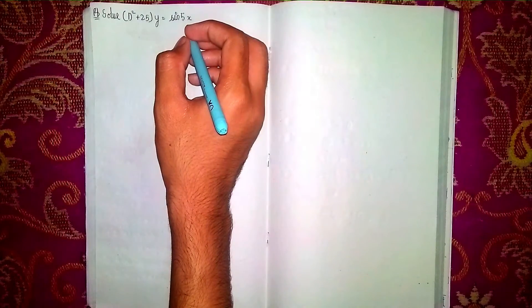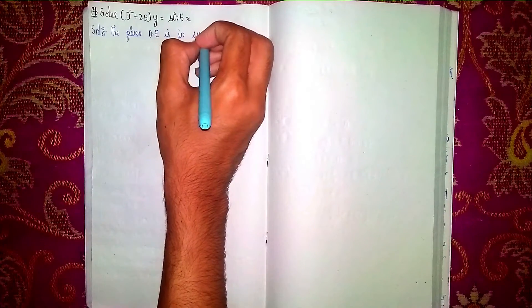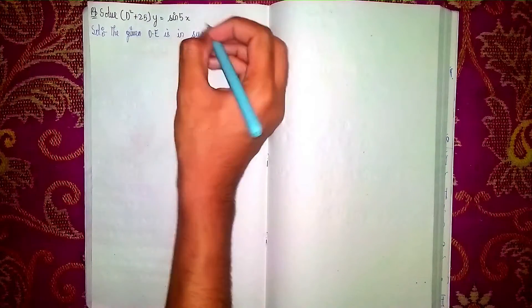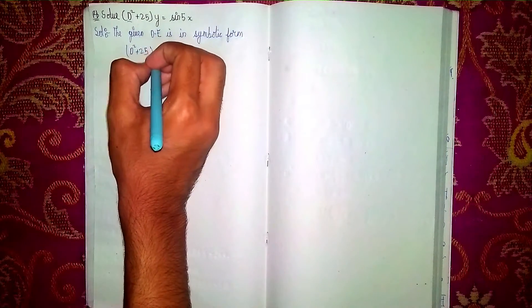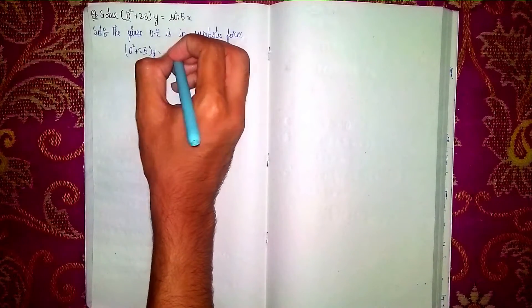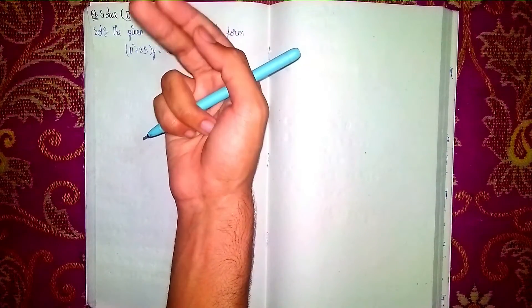Hello everyone and welcome back to my channel. Solve: D squared plus 25y is equal to sin(5x). This is a non-homogeneous linear differential equation. There are three steps to solve this question: first is the complementary function, then the particular integral, then the general solution.